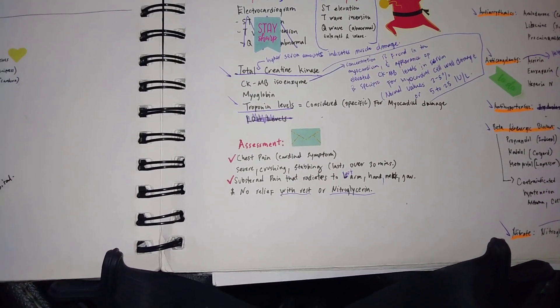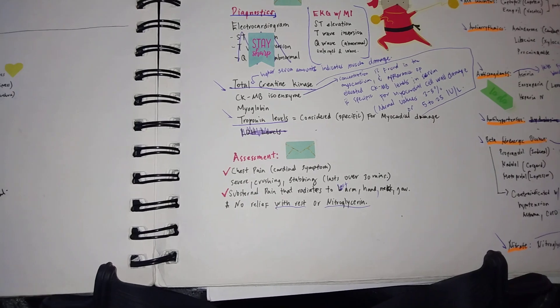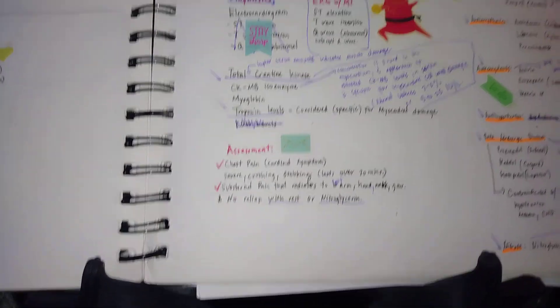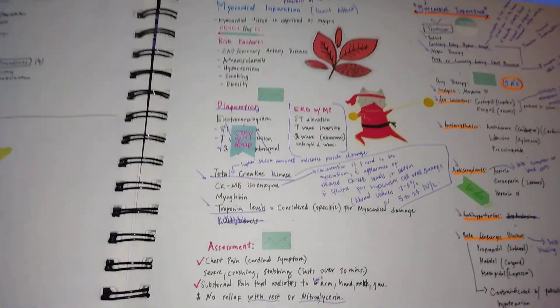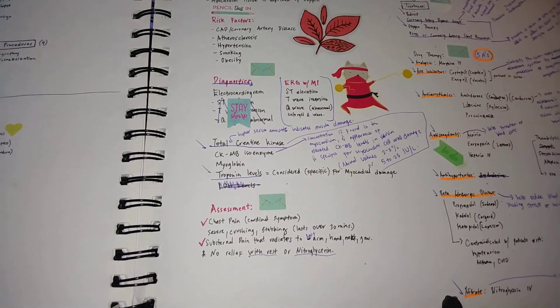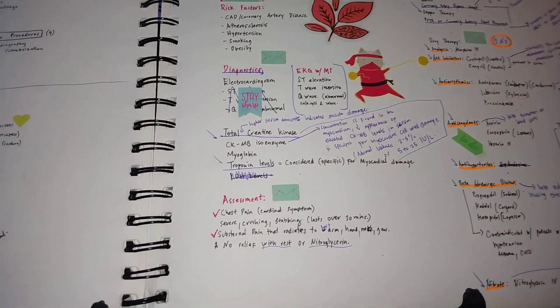We're also looking at the troponin levels, which is basically considered specific for myocardial damage, and it would be an elevated amount of troponin level in a patient with MI. Obviously, when we assess our patients, there's going to be chest pain.